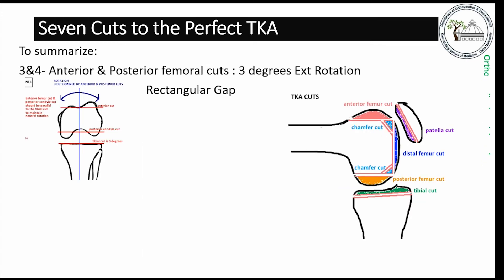The third and fourth cuts are the anterior and posterior femoral cuts, made with 3 degrees of external rotation to create a rectangular, balanced flexion gap. The fifth and sixth cuts are the anterior and posterior chamfer cuts, and the seventh cut is the patellar cut, which is made in a medialized position.